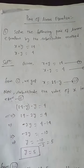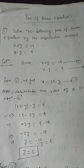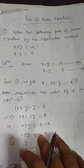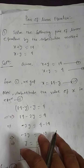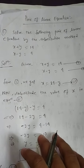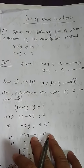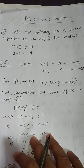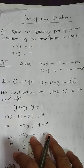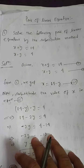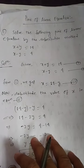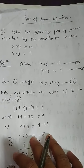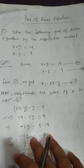Today my topic is pair of linear equations. Solve the following pair of linear equations by the substitution method: x plus y equals 14 and x minus y equals 4.